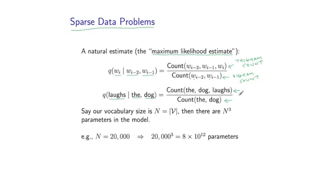Now as I said earlier, in general in these models, we are going to have a very large number of parameters. So if our vocabulary size is capital N, then there are roughly N cubed parameters in our model. As one example, if N is 20,000, then we have 20,000 cubed. That's around 8 times 10 to the 12 parameters.